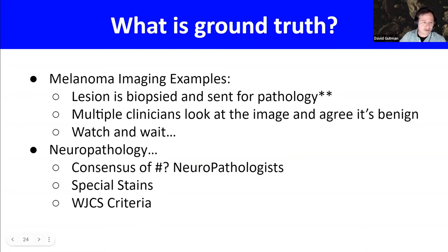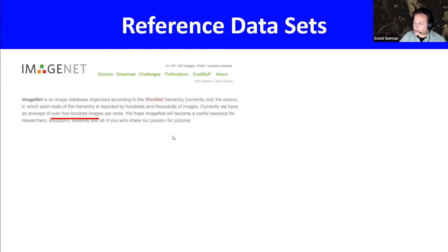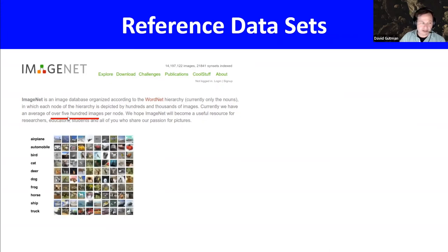At some point it becomes a question of tractability: how many neuropathologists can realistically look at every brown spot on a slide? A lot of the AI explosion has happened with reference datasets like ImageNet, which has 14 million images with 500 images per node. Fortunately, ImageNet was built around things you don't need medical school to identify — trucks, horses, cats, birds — whereas distinguishing a deer from an antelope might be harder. Collecting huge amounts of labeled data is relatively simple for everyday objects.